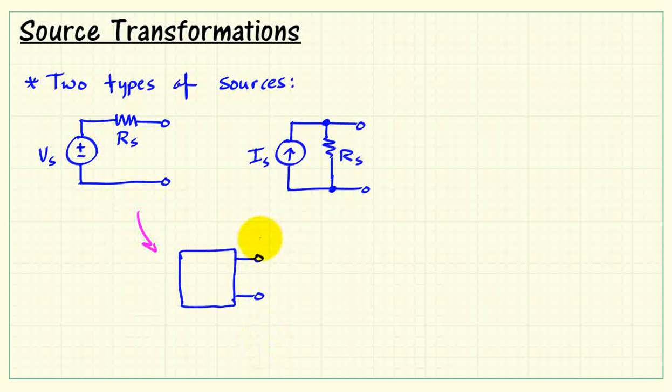The idea is that both of these sources can be considered equivalent at the terminals under the appropriate conditions. So the conditions are defined by what's going on at the terminal pair. I'll use my standard labels for voltage and current.